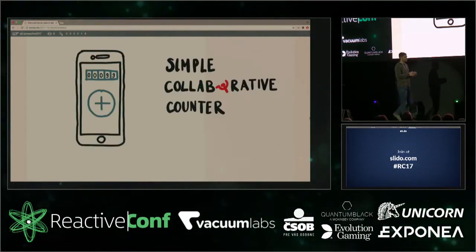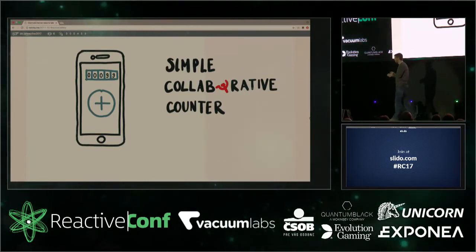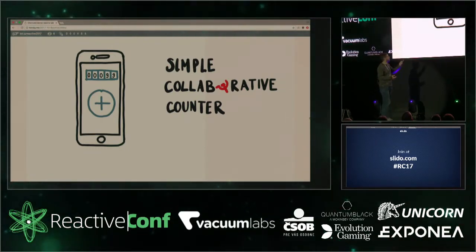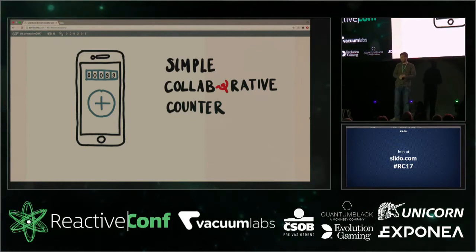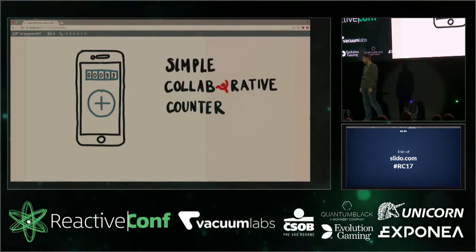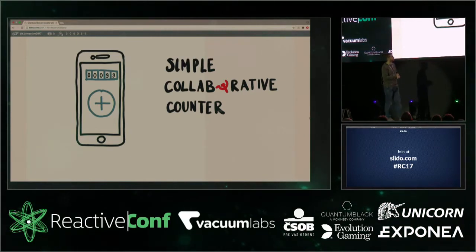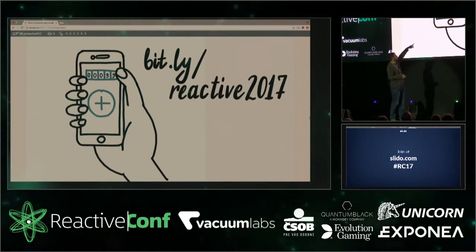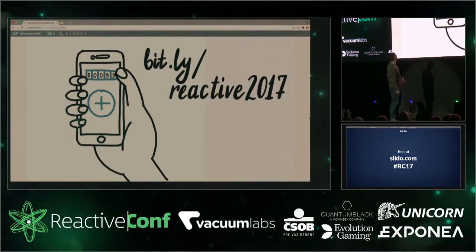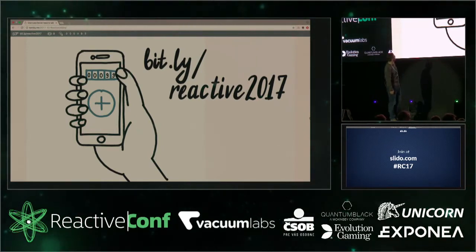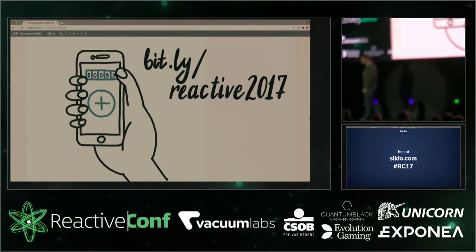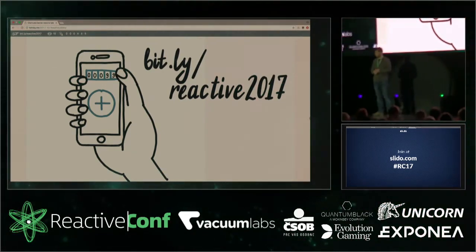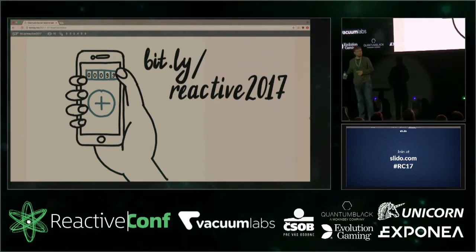I'll begin with an example. The simplest application possible is just a counter — one button and a number, you click the button and the number goes up. It's collaborative: everyone is clicking the same button. You can go to that URL in the header. There's a counter and we're increasing it very fast. Click it a couple of times and later in this talk I'll run some statistics on those clicks.